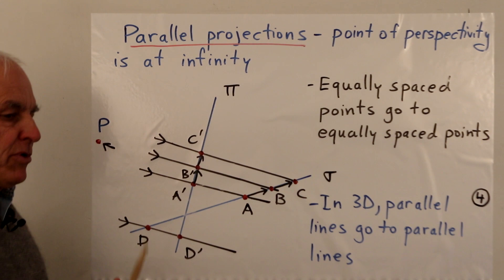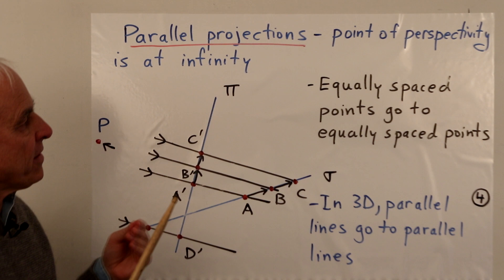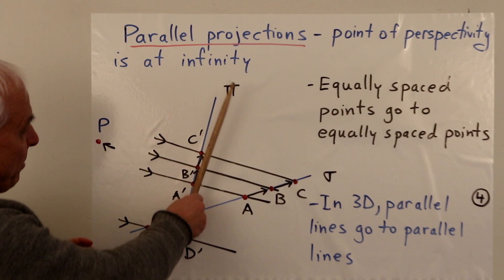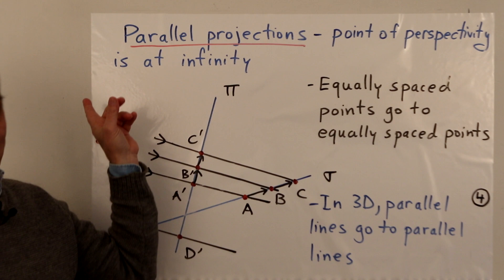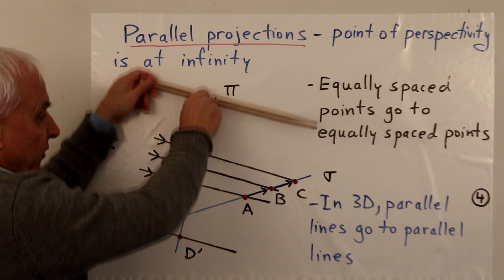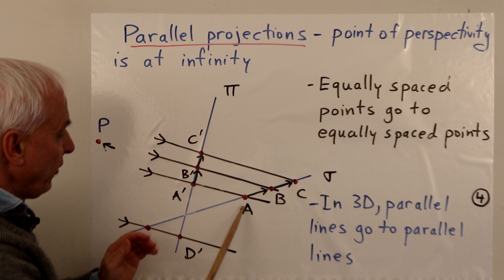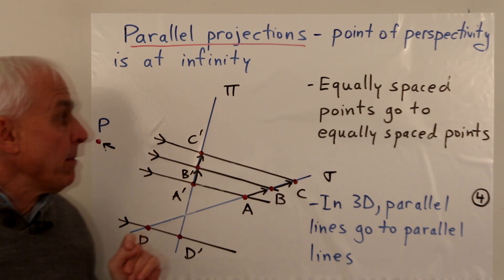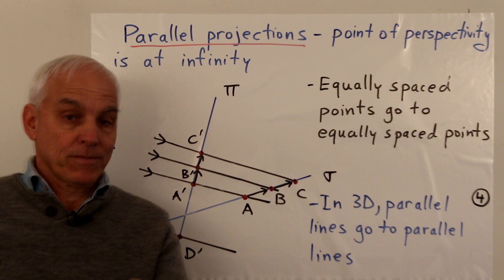There's a slight variation to this story where we consider a parallel projection rather than a perspective projection. This is really when the point of perspectivity P is removed very far — it actually goes to infinity. For example, if we have sigma and pi and we send P to infinity in a given direction, the lines emanating from P are all to be thought of as parallel. So the correspondence A goes to A', B to B', C to C' still holds.